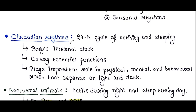First is circadian rhythms. These rhythms follow a 24-hour cycle of activity and sleeping, synchronized with light and darkness. Hence animals are active at a particular time of day and sleep at a different time. Circadian rhythm is the body's internal clock.